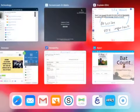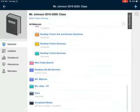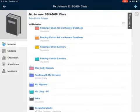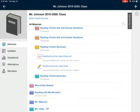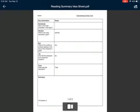To help us with that today, we're going to be using this graphic organizer. We're going to be using the Reading Fiction Summary. It's called the Reading Summary Idea Sheet. We're going to be using Somebody Wanted But So Then.